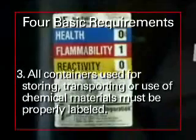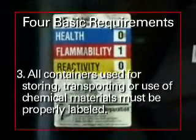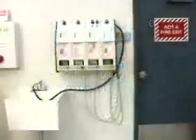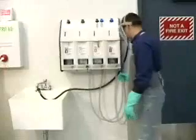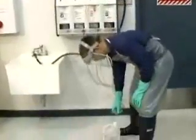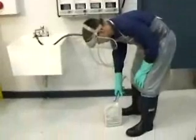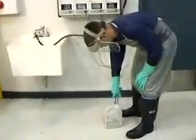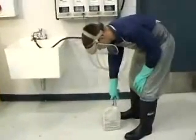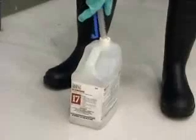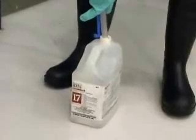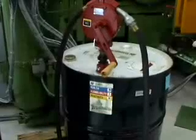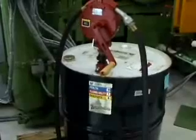Three, all containers used for storing, transporting, or use of chemical materials must be properly labeled. It is the responsibility of the user to ensure that the material is used, contained, stored, labeled, and disposed of in a proper manner. The label used on the container must be permanent and must have sufficient information to reference the contents to the proper MSDS. Vessels and tanks that are large and are used for bulk storage must also be permanently labeled.